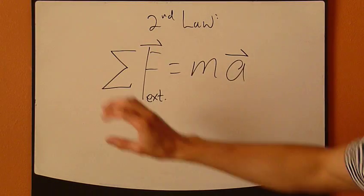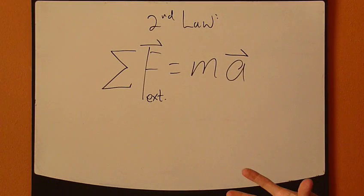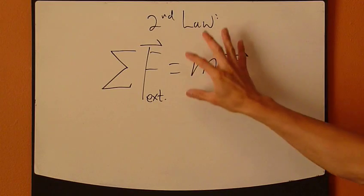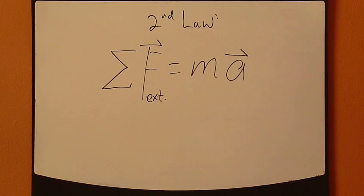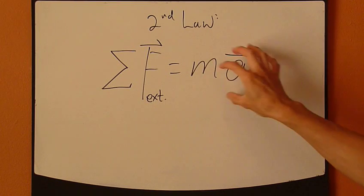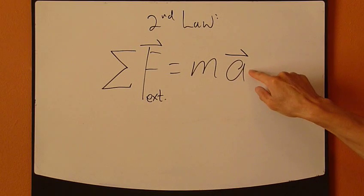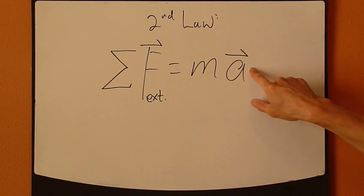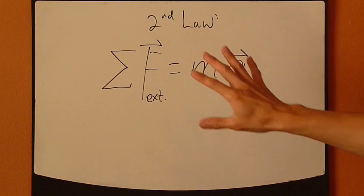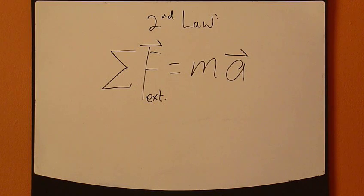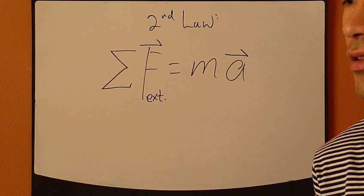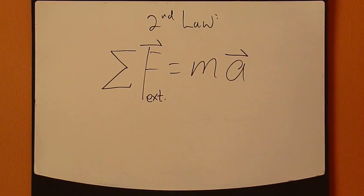So, left-hand side says sum all the external forces up. Right-hand side, it's the effect. That's the consequence. It's moving a certain way. It's moving a certain acceleration in a certain direction. So that's it. This is Newton's Second Law. That's one equation that covers the entire chapter.